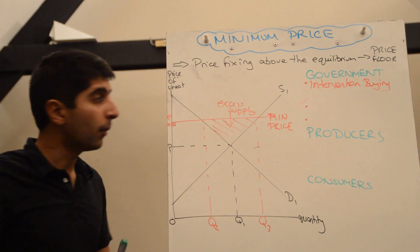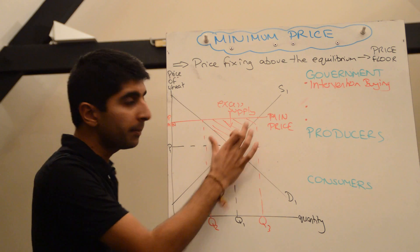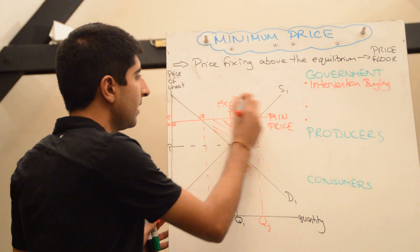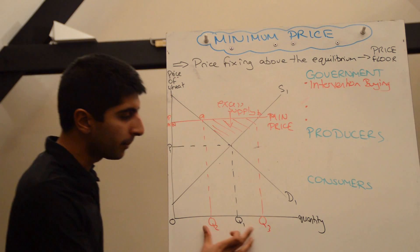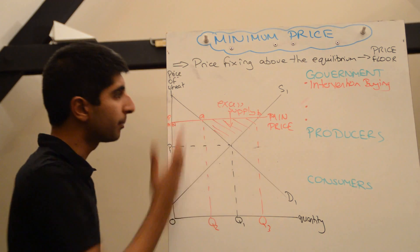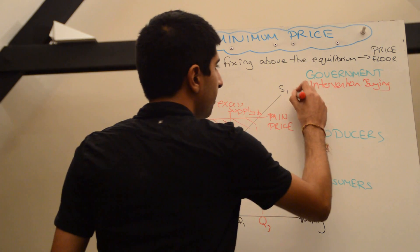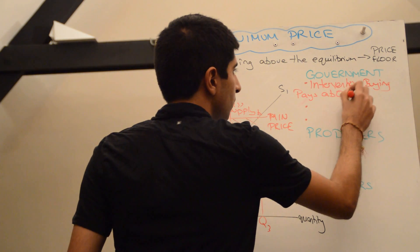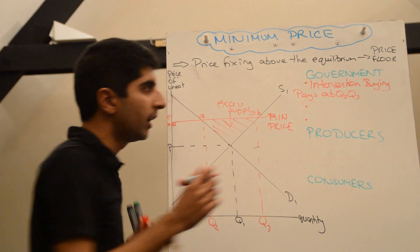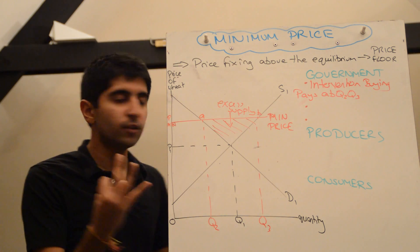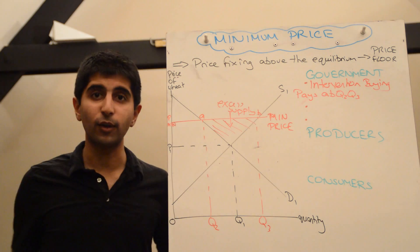The government will buy up the excess supply at the minimum price. So if we call this point A and this point B here, the government will buy up the difference between Q2 and Q3, which represents the excess supply, at the price PMIN. So the government will have to pay A, B, Q2, Q3 to actually buy up this excess supply. And then they have three options.